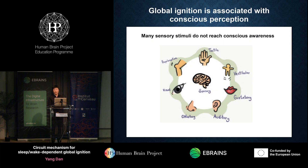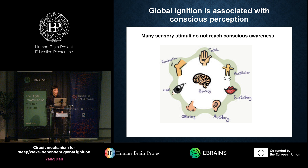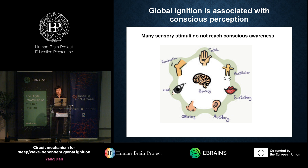Global ignition is a brain process closely associated with conscious perception. In daily life, we're constantly bombarded by many sensory stimuli from all these modalities, but most of them do not reach our conscious awareness. For example, in the auditory system, most of the time we're not aware of the background noise in our environment. And in the visual system, we may not see what's right in front of us if we're not paying attention. But the fact that these sensory stimuli are not consciously perceived does not mean that the signals fail to reach our nervous system. Even the unperceived stimuli can evoke strong responses in the primary visual cortex.